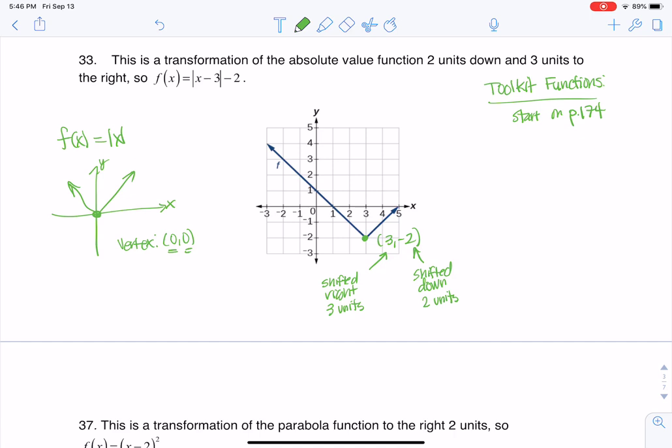How that affects your toolkit function is when you shift right, inside of your grouping symbols—and when I say inside of the grouping symbols, I'm looking at my original toolkit function where the grouping symbols are the absolute value symbols—so inside those absolute value symbols, I'm going to have X minus 3 to shift me right.